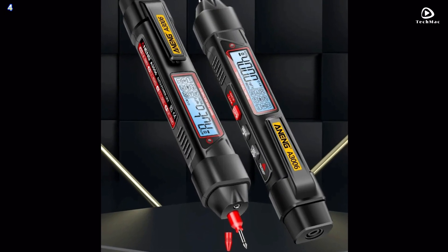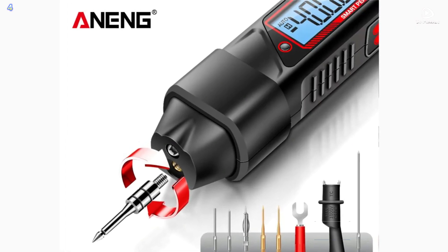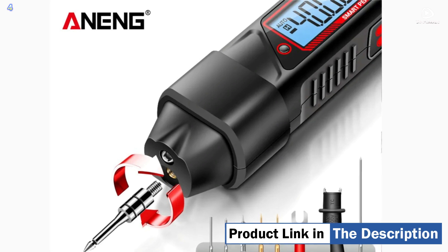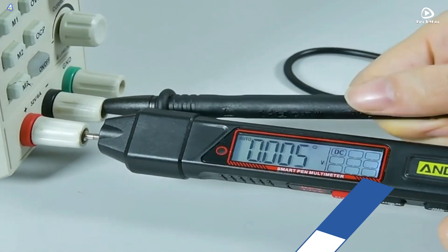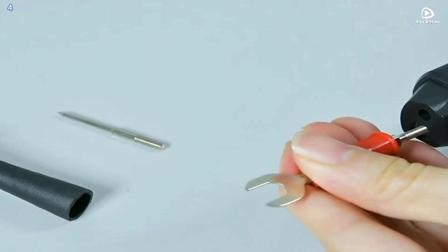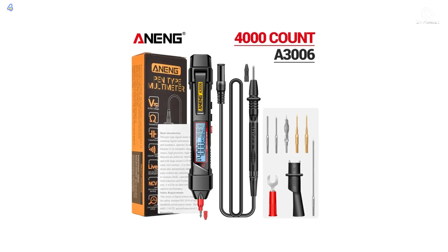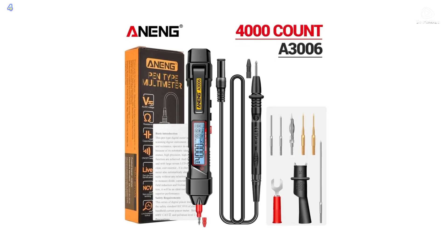Capacitor Discharge: before measurement, it is necessary to discharge the capacitor to avoid carrying high voltage. The Anning A3006 multimeter pen is a must-have tool for anyone working with electronics. It's efficient, reliable, and user-friendly.